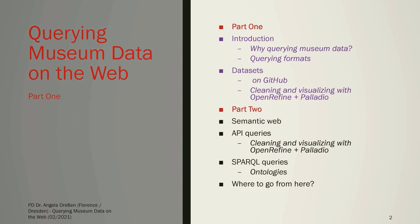In this tutorial, we will look at where to find and how to access museum data, considering various ways, like datasets available on GitHub, and data to be queried through an API or through a SPARQL endpoint. We will also look at first steps on how to make these data more accessible for visualization and analysis with the tools OpenRefine and Palladio.